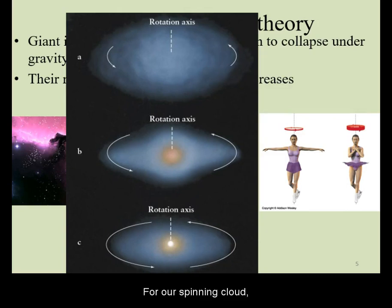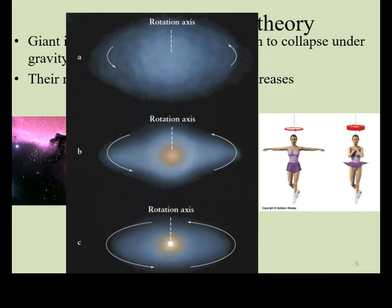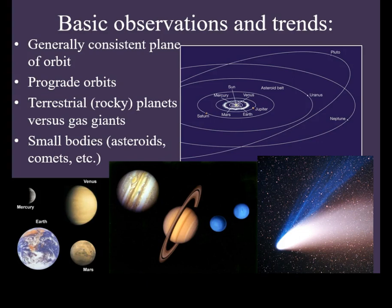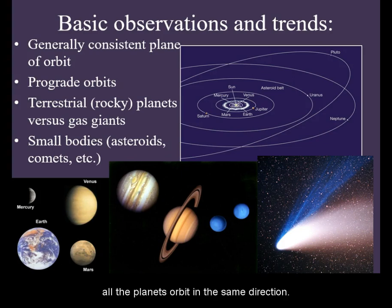For our spinning cloud, any particle along the rotational axis will have very little velocity and will fall right into the center. The material in the plane of the disk will be moving faster and will be prevented from falling in. This results in the overall disk shape of the newly forming solar system. This will help explain why our solar system has a generally consistent plane and why all the planets orbit in the same direction.